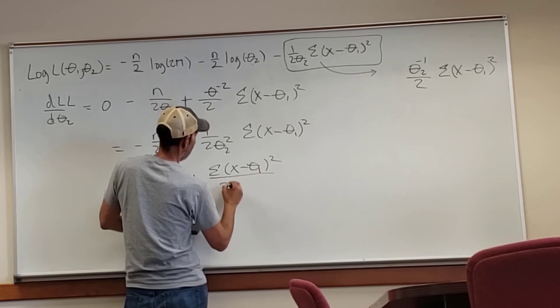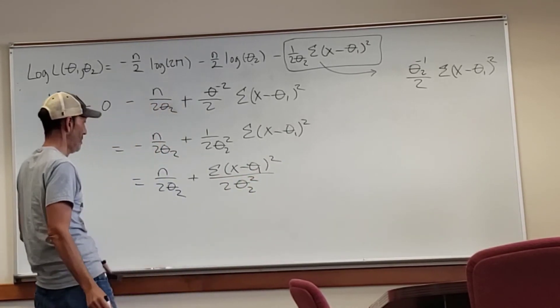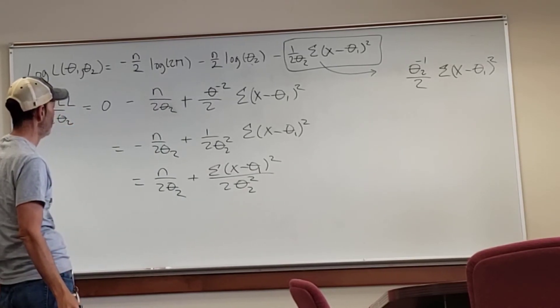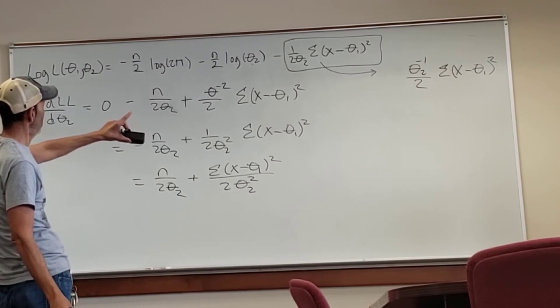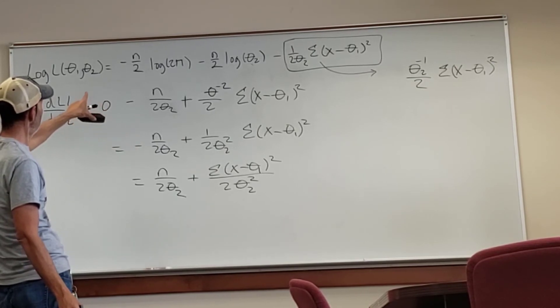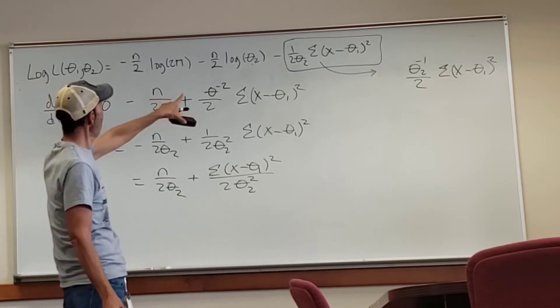I love doing these proofs, because you have to think through them and see what the final outcome will be. So we have these two theta twos in the denominator. One is squared and one is not. But we want to solve for theta two. So what should I do? What if I multiplied both of these last terms by theta two squared? Would that work?